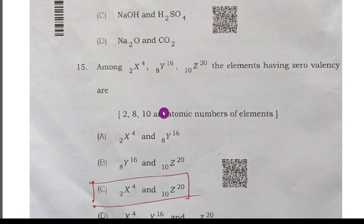Next, 15th question: among three elements, the elements having zero valency. Zero valency is nothing but zero group elements or noble gases. Here X2 means that is helium, Z10 means that is neon. Therefore option C, X2 and Z10 is the right answer.